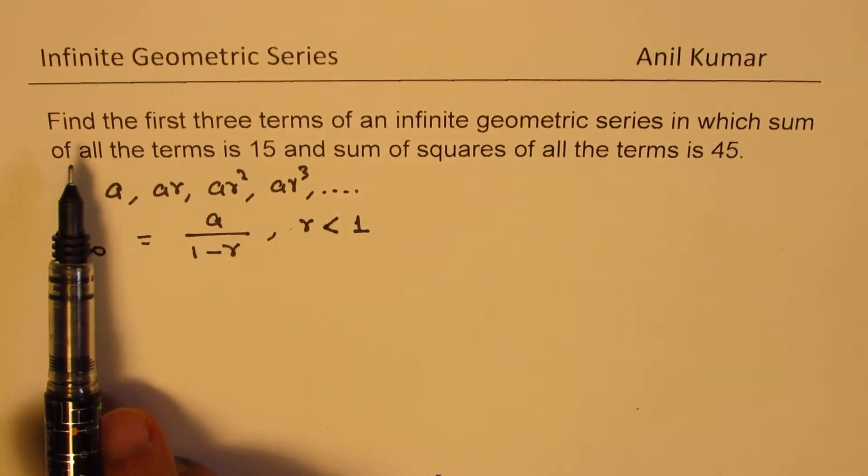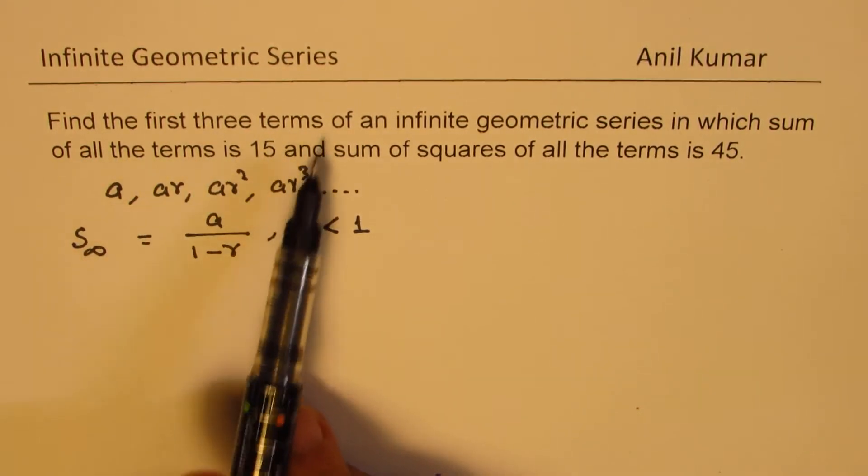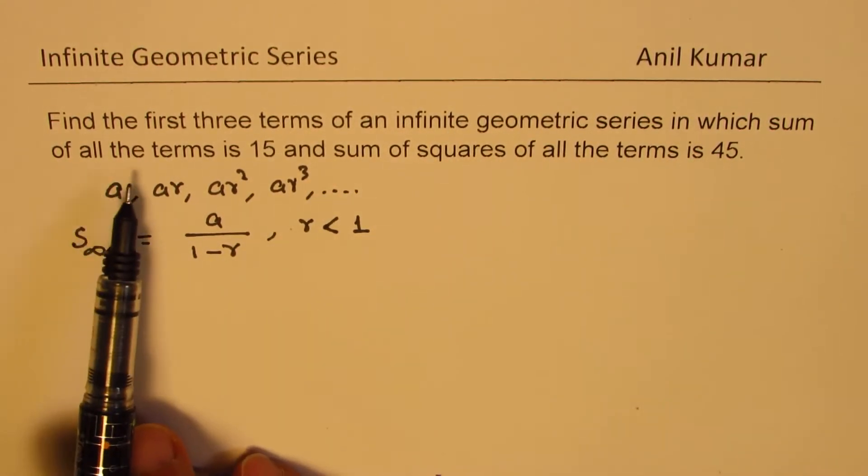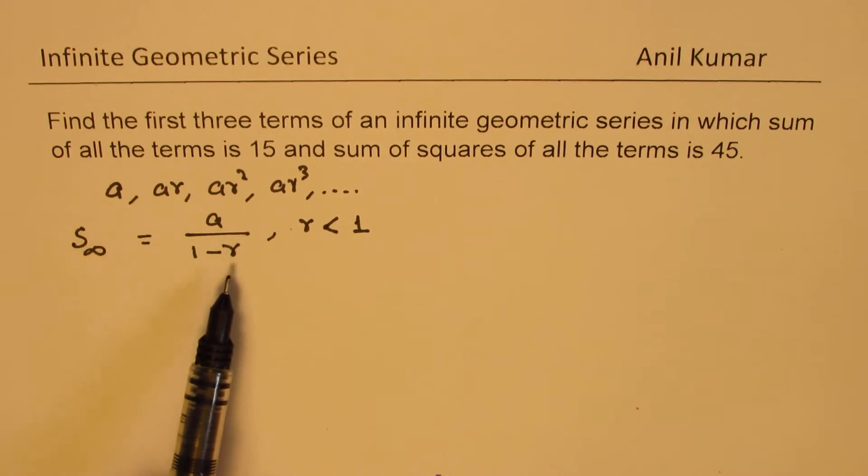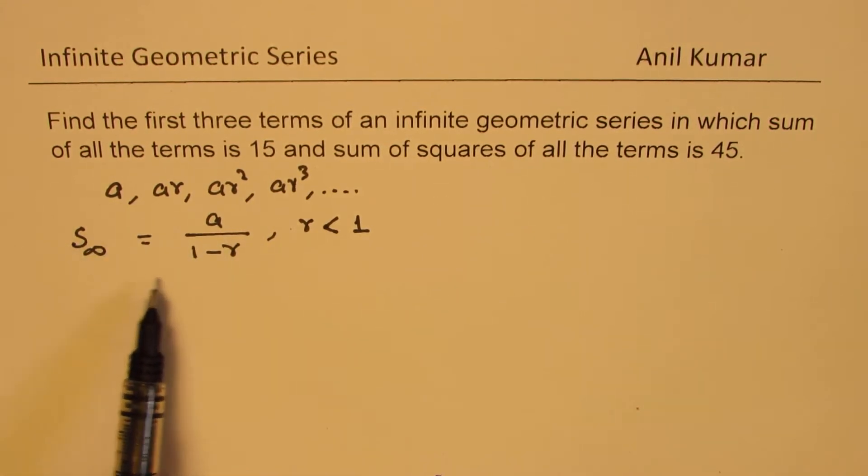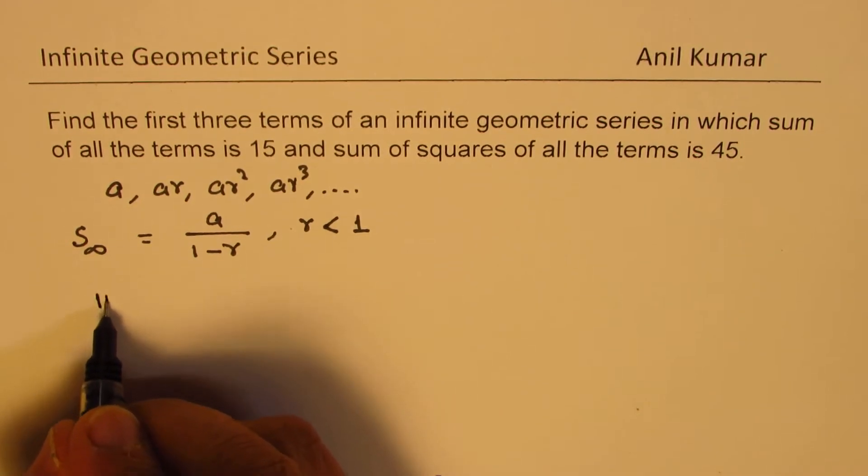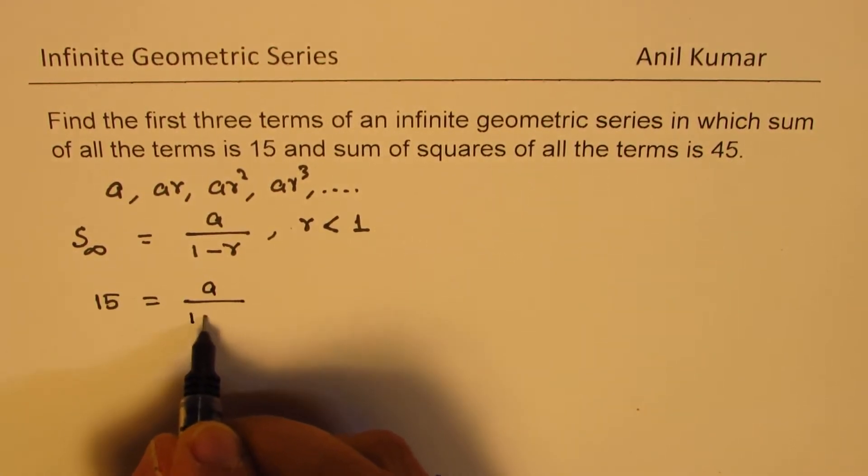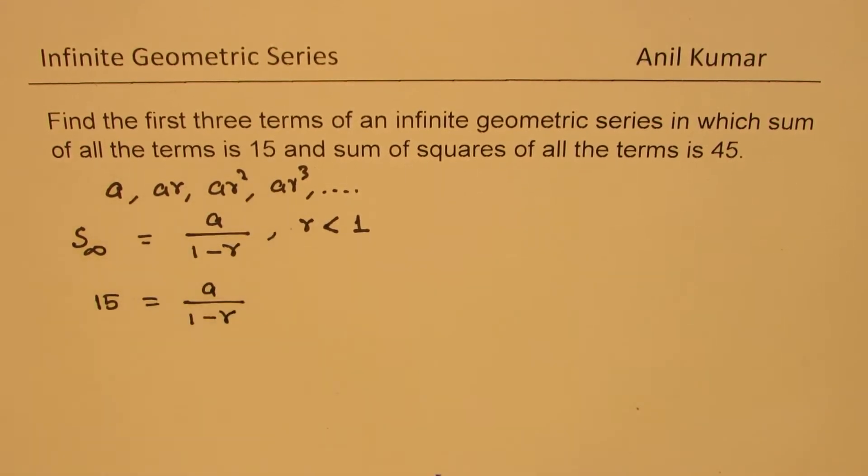Now in this case, we are given that find the first three terms of an infinite series in which sum of all the terms is 15. So we could write this as 15 equals A over 1 minus R. So that is equation 1, we get sum of all the terms is 15.